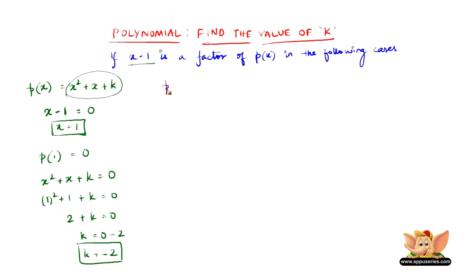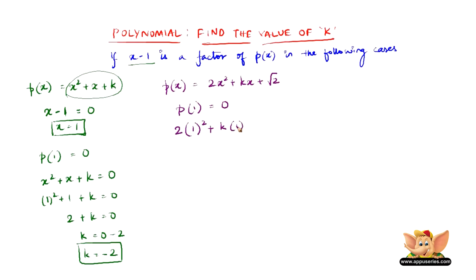Now let us look at another p of x, which is 2x squared plus kx plus root 2. Since x minus 1 is a factor, p of 1 should be equal to 0. So 2 into 1 squared plus k into 1 plus root 2 equals 0. From this we find k equals 0 minus root 2, and when root 2 goes to the other side it becomes minus root 2, and 2 also goes to the other side becoming minus 2.